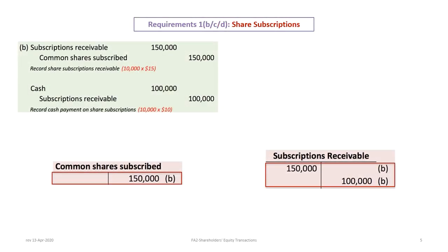Moving on to requirements 1B and C, which deal with share subscriptions. In transaction B, the company issues 10,000 share subscriptions at $15. The company will debit share subscriptions receivable for $150,000 and credit common shares subscribed for $150,000. This is a temporary equity account that sits in equity until the shares are fully subscribed or lapse. Because the common shares are not yet issued, the credit goes to this temporary parking spot rather than to common shares.